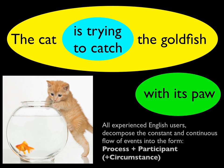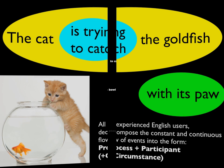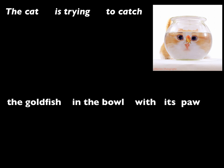In sum, all experienced English users decompose the constant and continuous flow of events into these elements: process, plus participant — not necessarily in that order — plus circumstance. Circumstance has brackets around it in the formula, signaling that this element is optional and outside the grammatical integrity of the clause. Circumstance contributes to the overall framing of the process, but is not grammatically essential to what's occurring. 'The cat is trying to catch the goldfish in the bowl with its paw. Poor goldfish.'